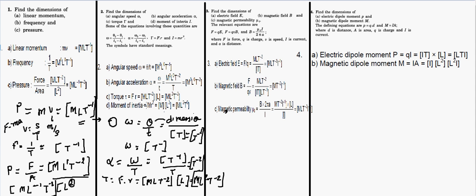For moment of inertia, the formula is I = MR². We will see the definition in the next chapter. For now, M has dimension M, and R² has dimension L². So the dimension of moment of inertia is ML².